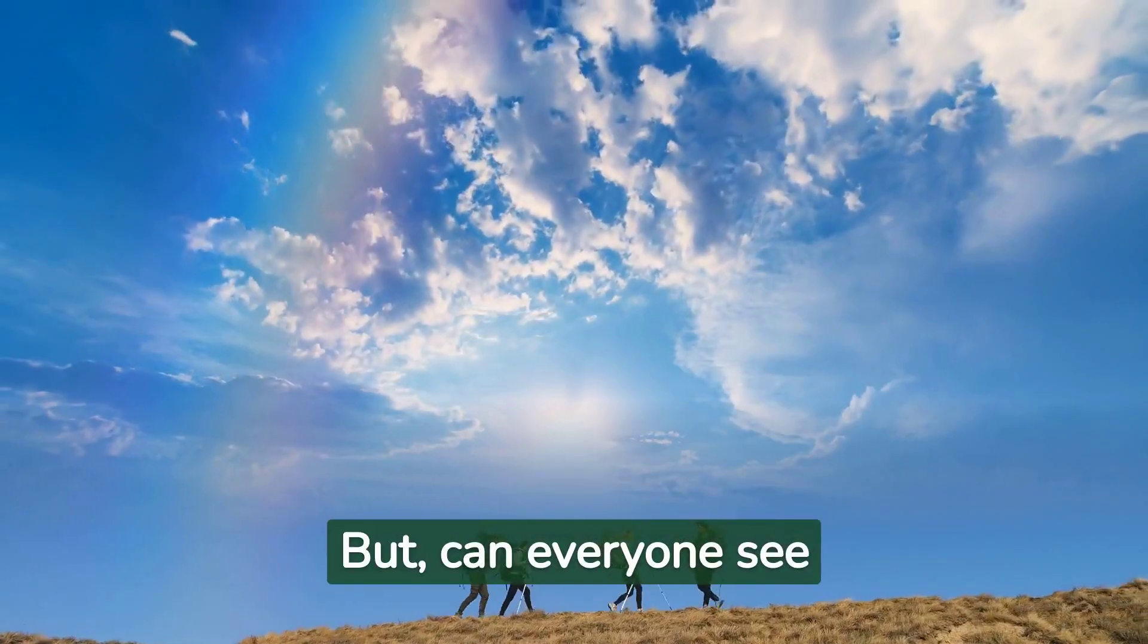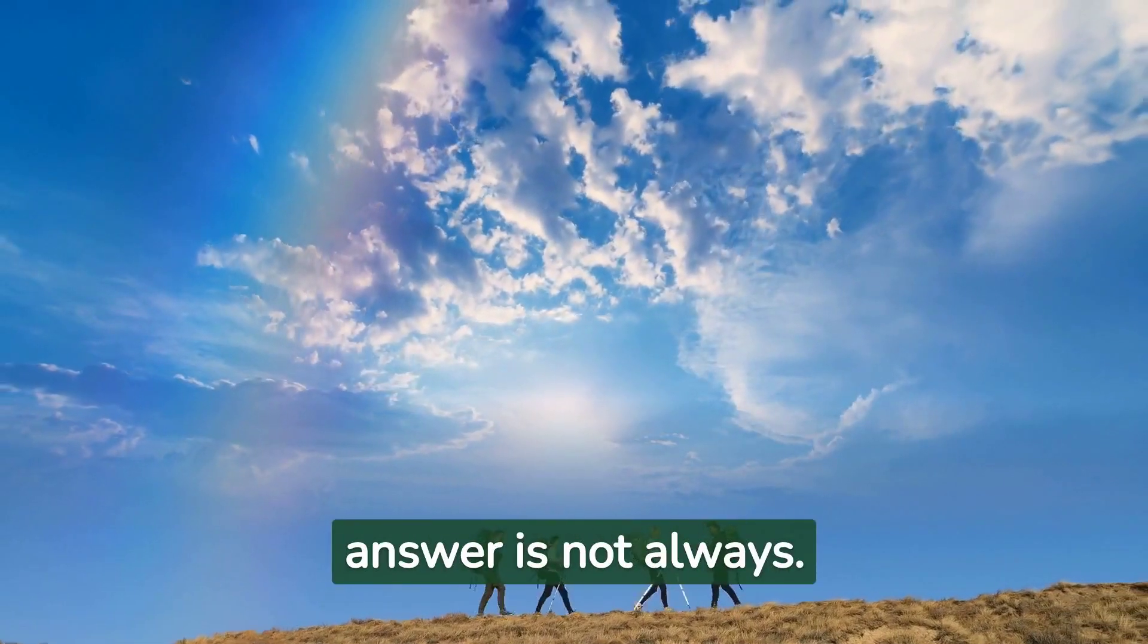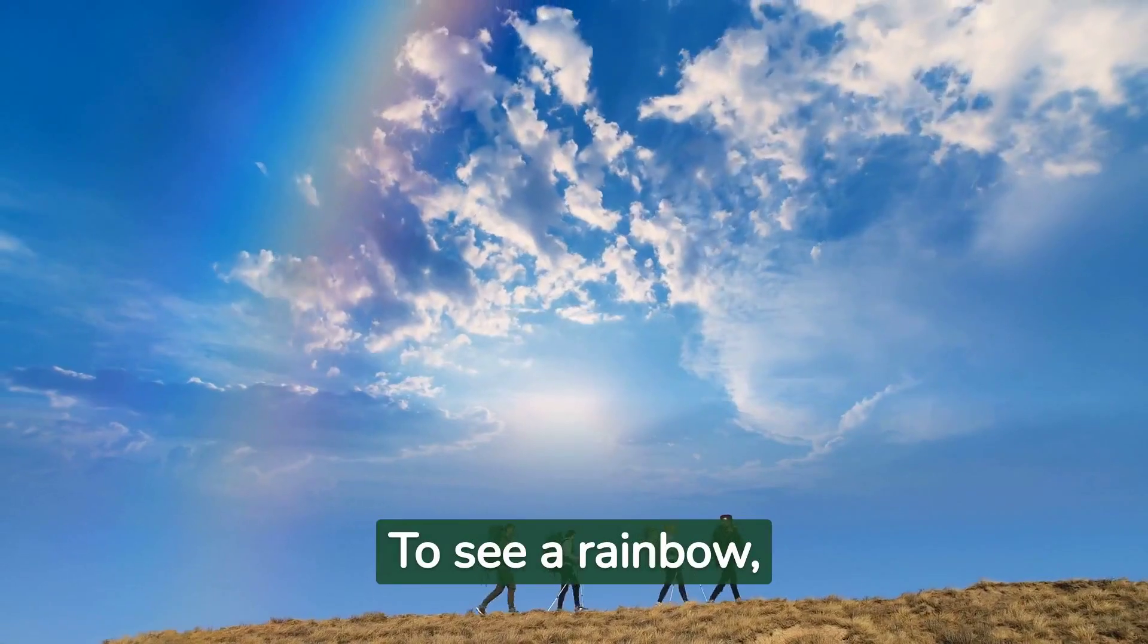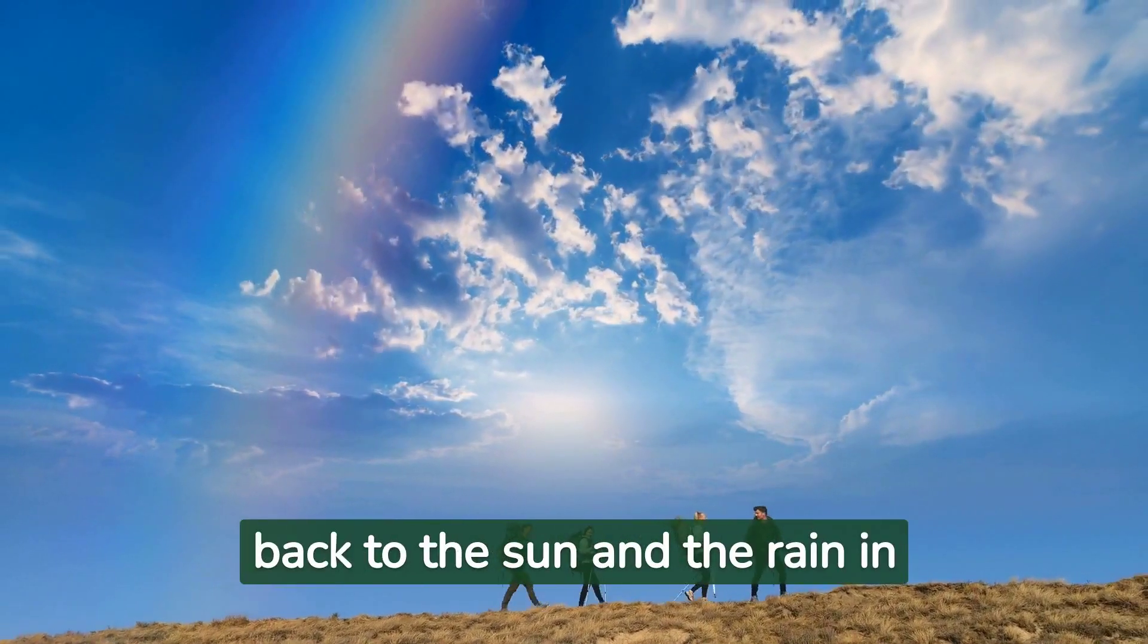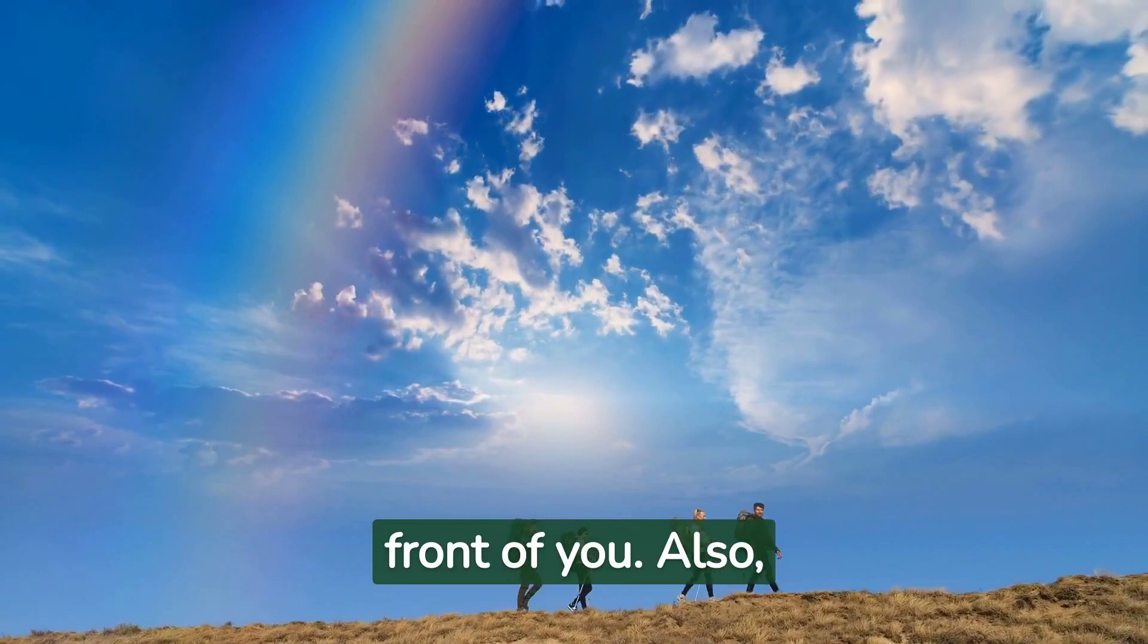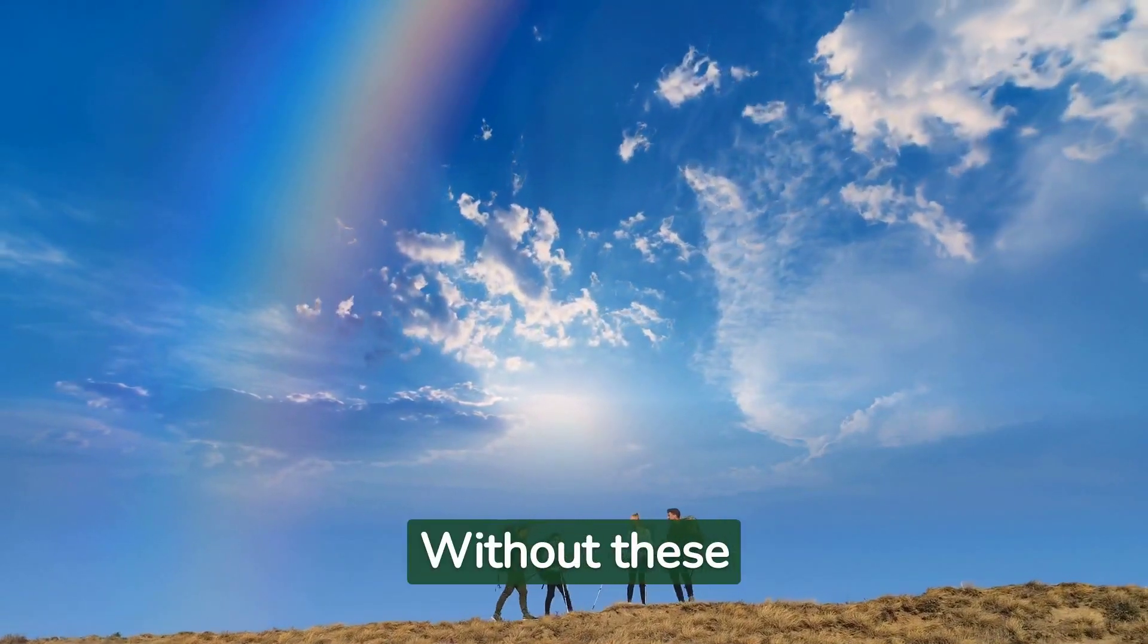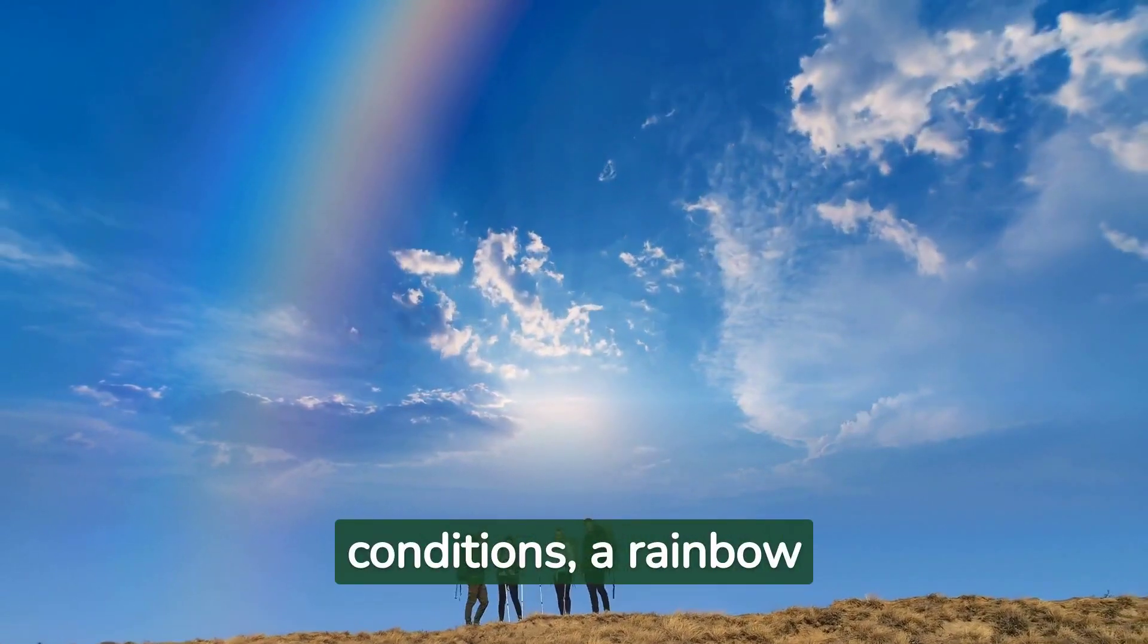But can everyone see a rainbow? The answer is not always. To see a rainbow, you must be standing with your back to the sun and the rain in front of you. Also, the sun must be shining. Without these conditions, a rainbow cannot form.